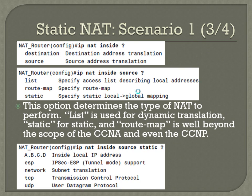IP NAT inside gives you options of source or destination; in this case we're going to choose source. From there you can see you've got list, route map, and static. List is used for dynamic translation, which we'll do in another example. Static is used for static, obviously. Route map we're not going to worry about at all — it's well beyond the scope of the CCNA and even the CCNP for the most part.